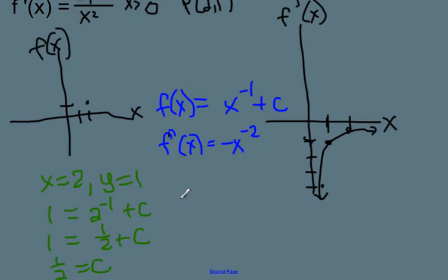So that means that I have the function y equals, or in this case I probably should say f of x because my original graph was given in terms of f of x. So f of x is going to be 1 over x plus 1 half. And I know that x has to be greater than 0.